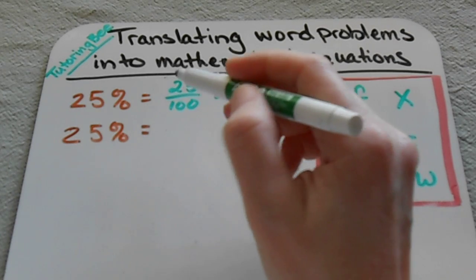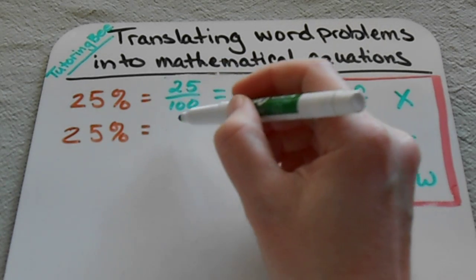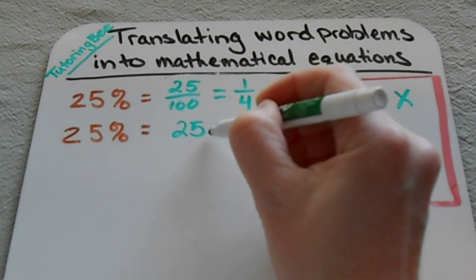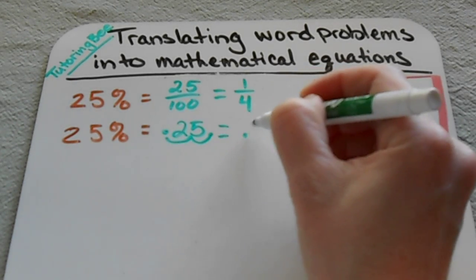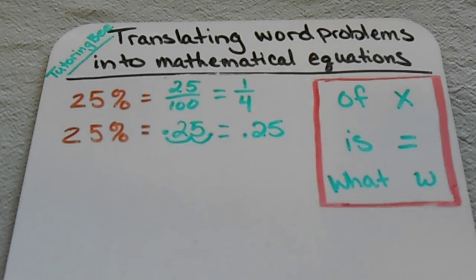So in order to change a percent into a decimal, we would actually start with the decimal here, move it over to the left two times. So that's going to give us 0.25 or 25 hundredths.